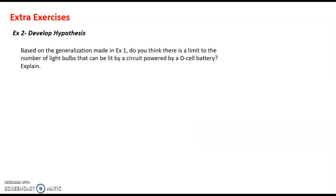Exercise two: develop a hypothesis based on the generalization made in exercise one. Do you think there is a limit to the number of light bulbs that can be lit by a circuit powered by a certain D-cell battery? We've just concluded that as the number of light bulbs increases, less and less current is going to flow through the circuit.